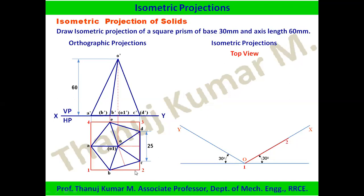Measure 1-2 in actual scale, convert it using the isometric scale, and locate the point. Similarly measure 1-4, convert to isometric scale, and join to form the box. Locate pentagon points A, B, C, D, E on the base — for each point, measure the distance from the box corner in the orthographic view, convert using the isometric scale (45° to 30°), and locate it on the isometric projection.